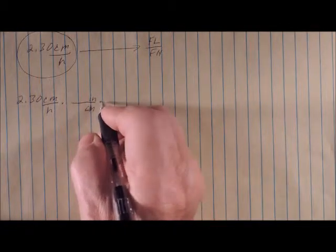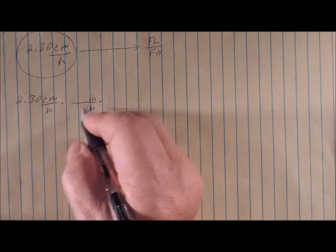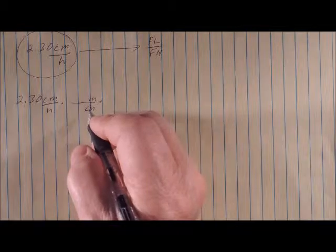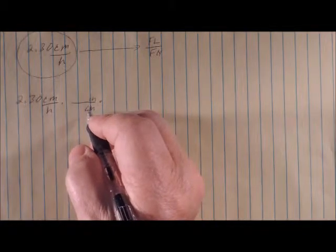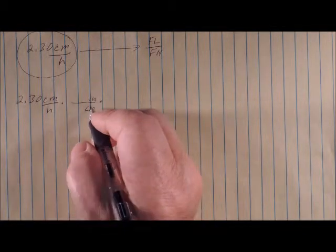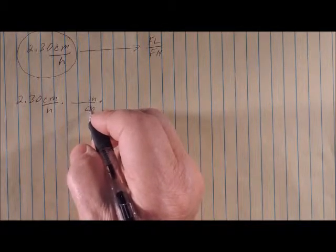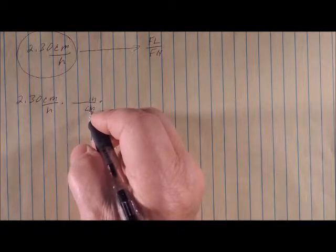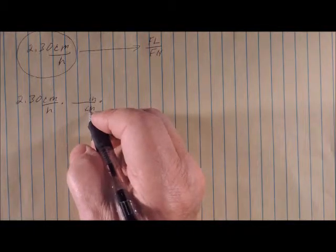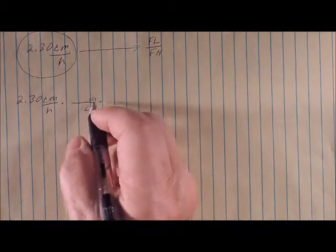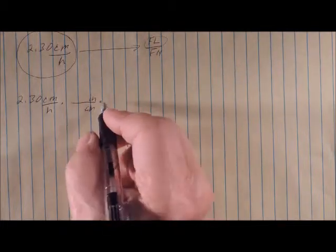So I'm going to set this up without putting any numbers into this initially. I'm going to set it up with the conversion factors just using the units. And I'm going to go through it and make sure everything is going to factor out properly before I put the numbers in it. Just to show you how it works. So I'm going to go from centimeters to inches. Now remember, I'm heading towards furlongs, hopefully.